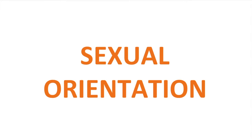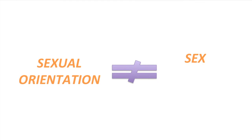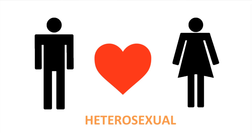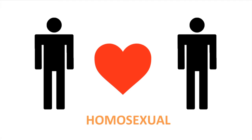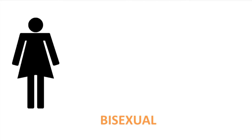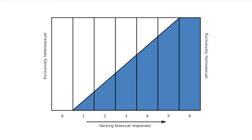And then there is sexual orientation, which is about who people love. This is independent from their sex or gender. People may be heterosexual, meaning they love people of the opposite sex; homosexual, they love people of the same sex; or bisexual, they love people of both sexes. Like gender, sexual orientation isn't a binary concept — it is a spectrum.